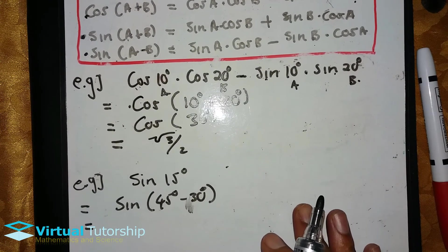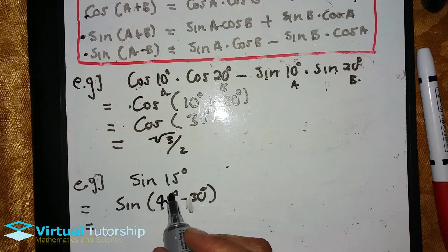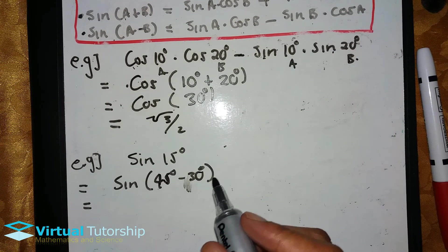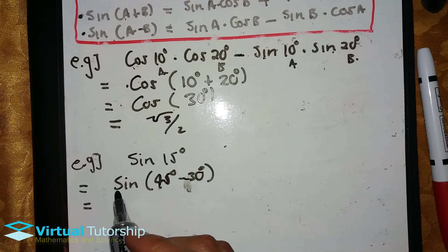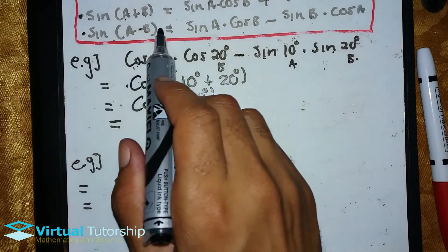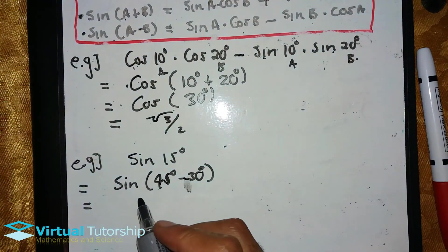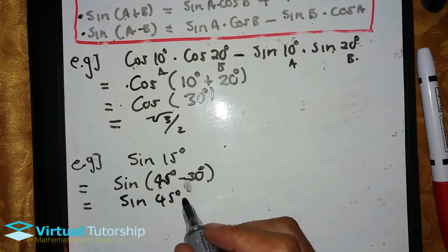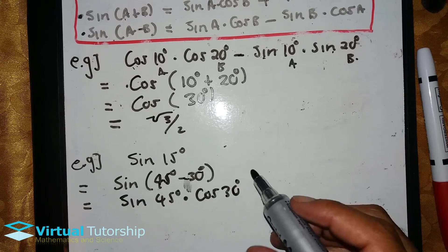Equal to sine 45 degrees minus 30 degrees. So what is this without a calculator? We need to use the compound angle. So using the compound formula, we apply the minus formula. So it's sine 45 degrees, which acts as A, times cosine 30 degrees, which acts as B.